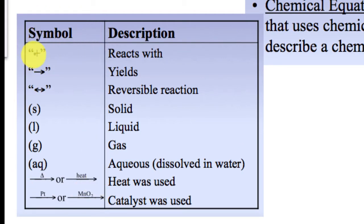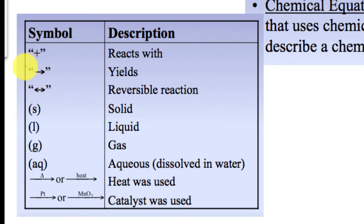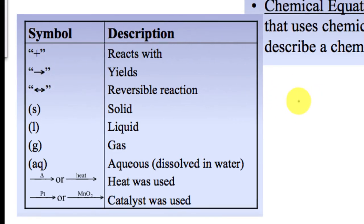Here are the new symbols you'll want to know. The plus sign means something is going to react with — it separates our substances. Then we have the yield sign. We don't use an equal sign in chemistry; we use a yield sign, which means 'to produce' or 'to form.'